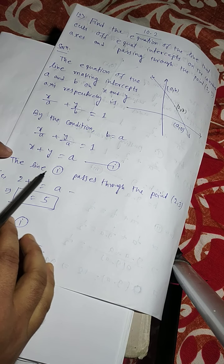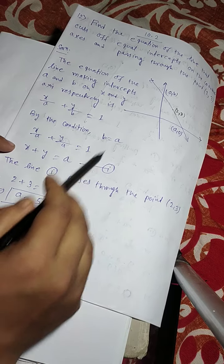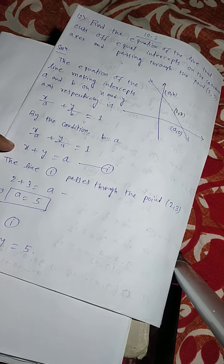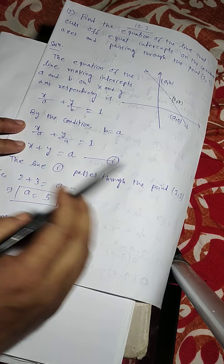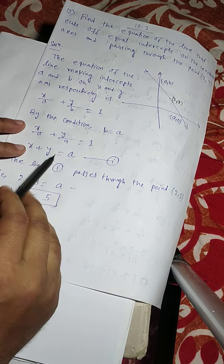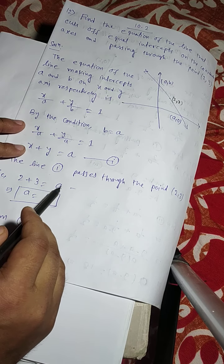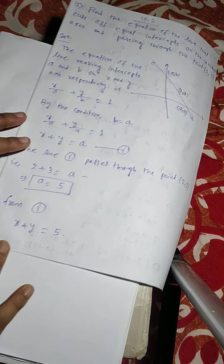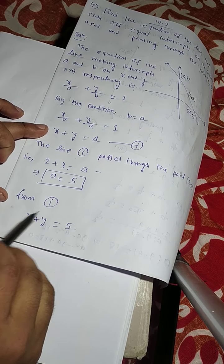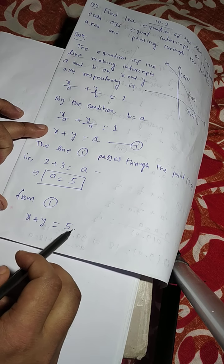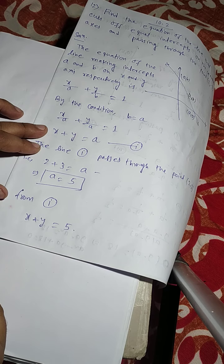Now line 1 passes through the point (2, 3), so X is replaced by 2 and Y is replaced by 3. So 2 plus 3 equals A, giving A equals 5. From equation 1, X plus Y equals 5. This is the required line.